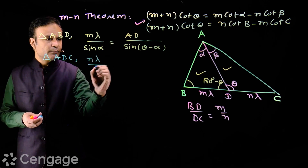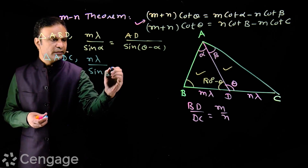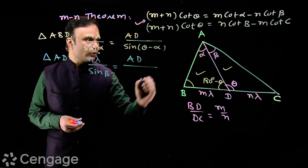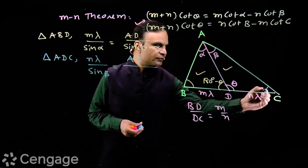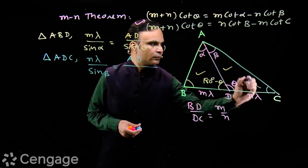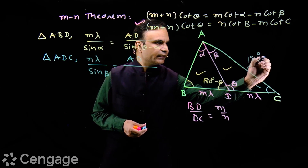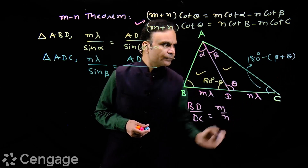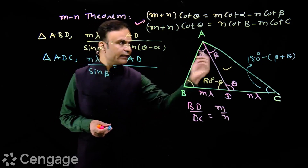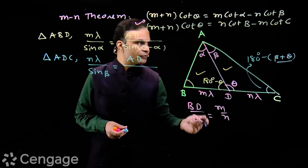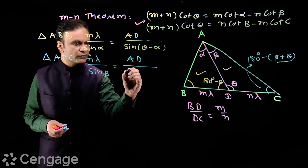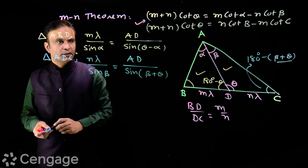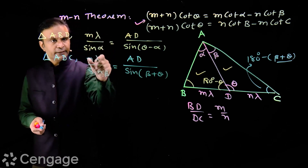Now we apply the sine rule in triangle ADC. In triangle ADC, we have n·λ over sin beta, which equals AD over the angle ADC. That angle ADC is 180 degrees minus (beta + theta), and sin of 180 degrees minus (beta + theta) equals sin(beta + theta). So we have sin(beta + theta) in the denominator.